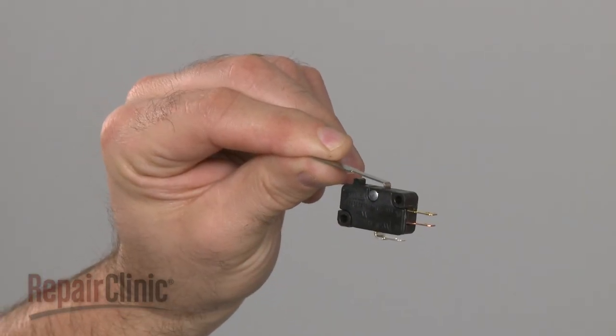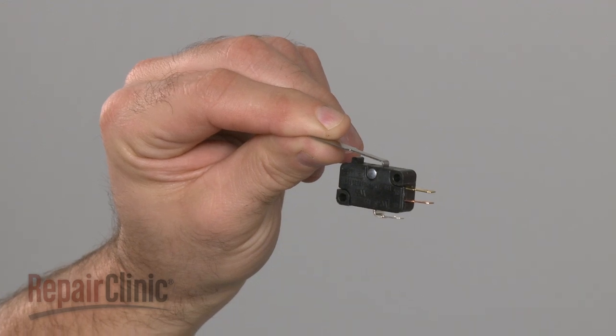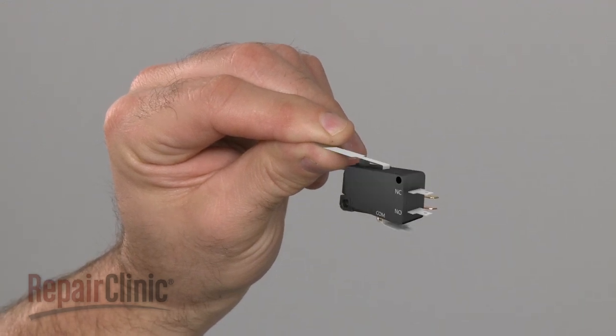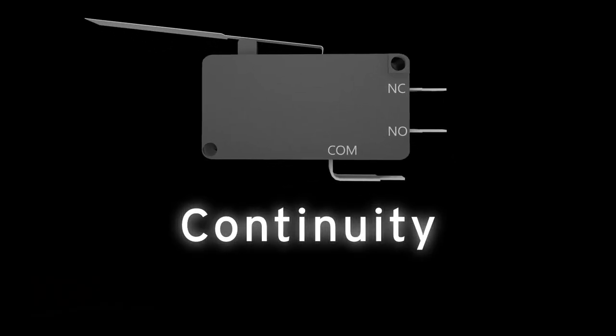Since you can't always tell if the freezer switch has failed simply by looking at it, you'll need to perform a continuity test. A continuity test will determine if a continuous electrical path is present in the switch.